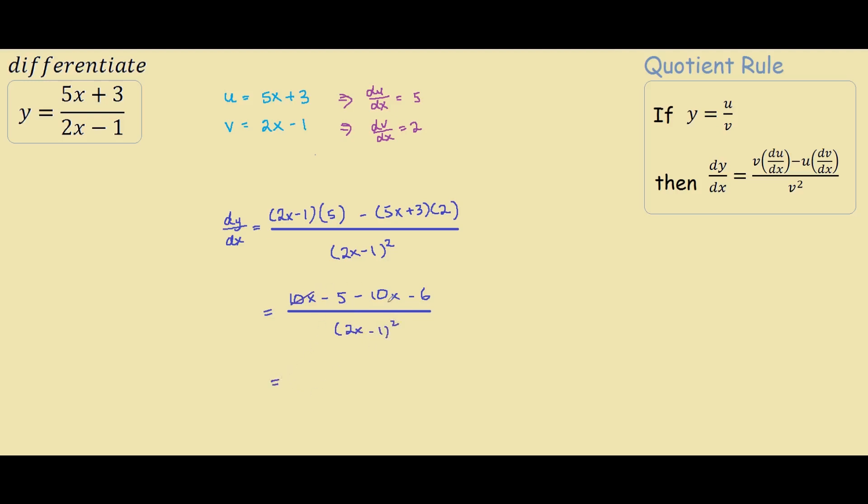So our 10x cancels out and we're left with negative 11 all over 2x minus 1 squared, and that is our answer.